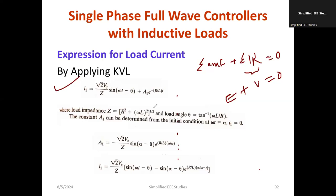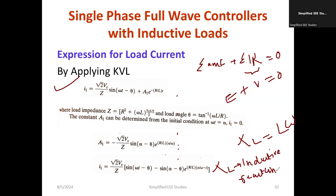Inductive reactance XL equals L times omega, where omega is the angular frequency. You can write angular frequency in terms of supply frequency as omega equals 2 pi f. The angle theta can be computed as tan-inverse of L-omega divided by R. From this general equation, you can solve for I1 by applying the differential equation and computing the coefficient A1.